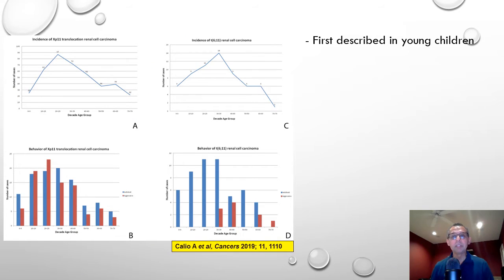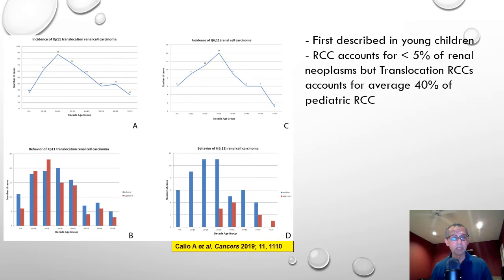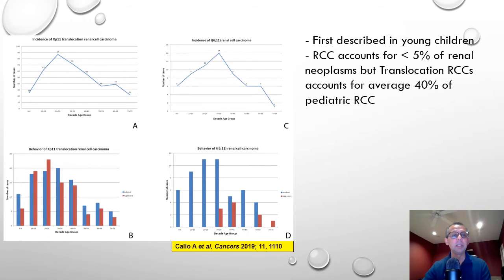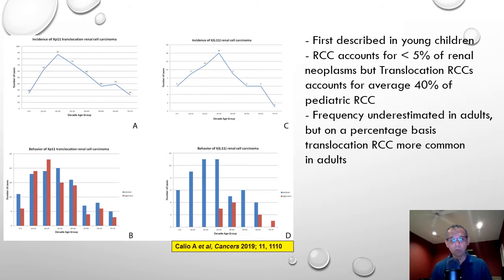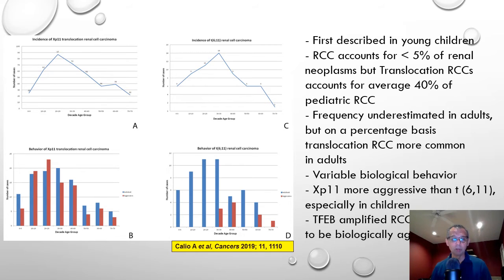These tumors were first described in young children. Translocation renal cell carcinoma accounts for only 5% or less of all renal tumors overall, but disproportionately accounts for over 40% of pediatric renal cell carcinomas, with a clear peak in the pediatric age group. However, from a percentage basis, these tumors are still more common in adults in absolute numbers, and they are increasingly being described in adults across various age groups.